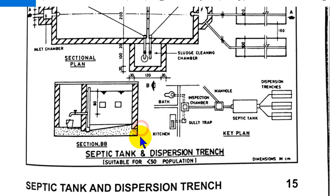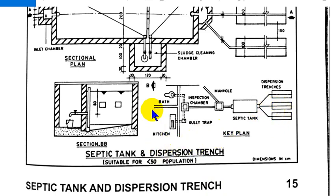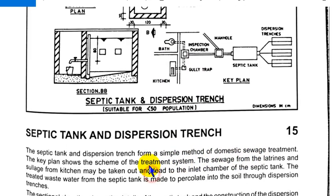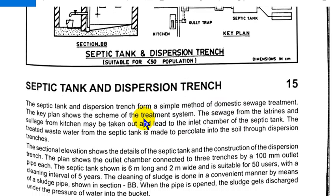The safety tank is also used in dispersion. It is used in a triangular shape as well as a rectangular shape. The safety tank is used in domestic sewage treatment.